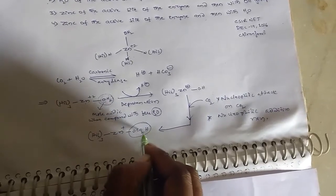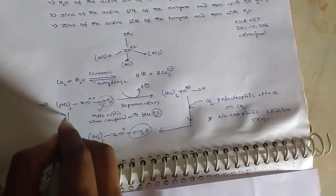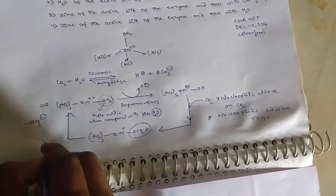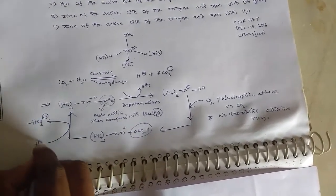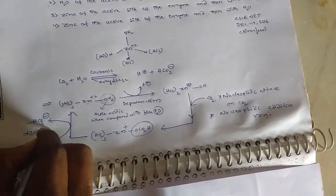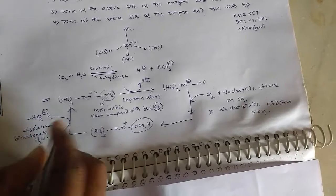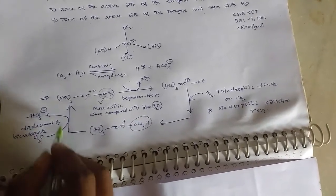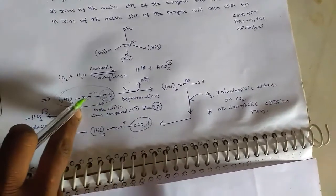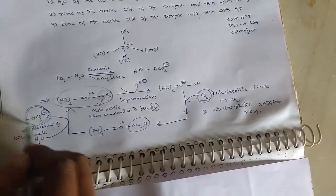This gives a complex where a carboxylic acid group is attached to the zinc. Further, elimination of bicarbonate occurs by the addition of water — the bicarbonate is displaced by water — and we recover the initial carbonic anhydrase. By this process, carbonic anhydrase converts carbon dioxide into bicarbonate, which is harmless.